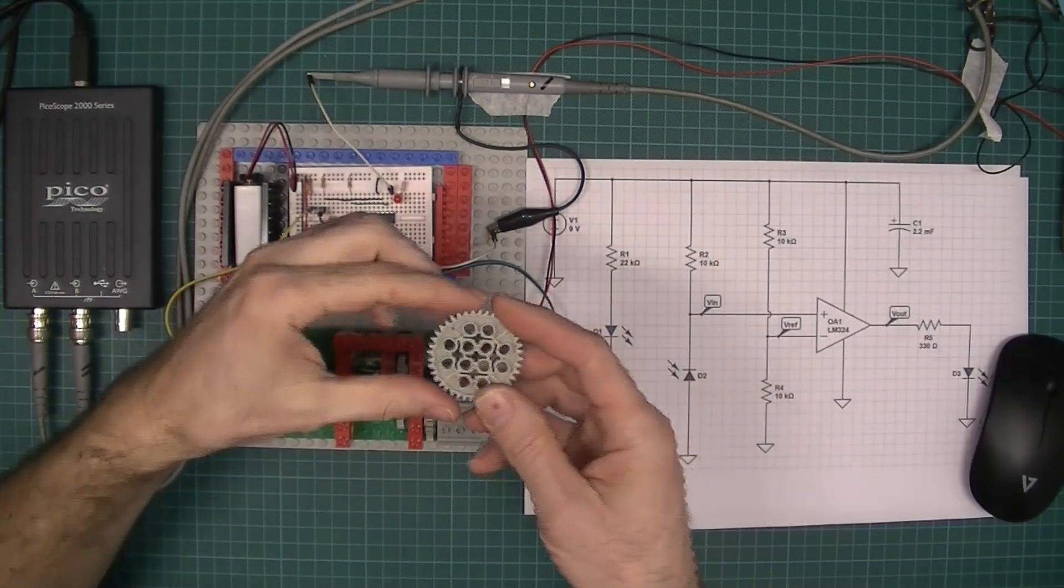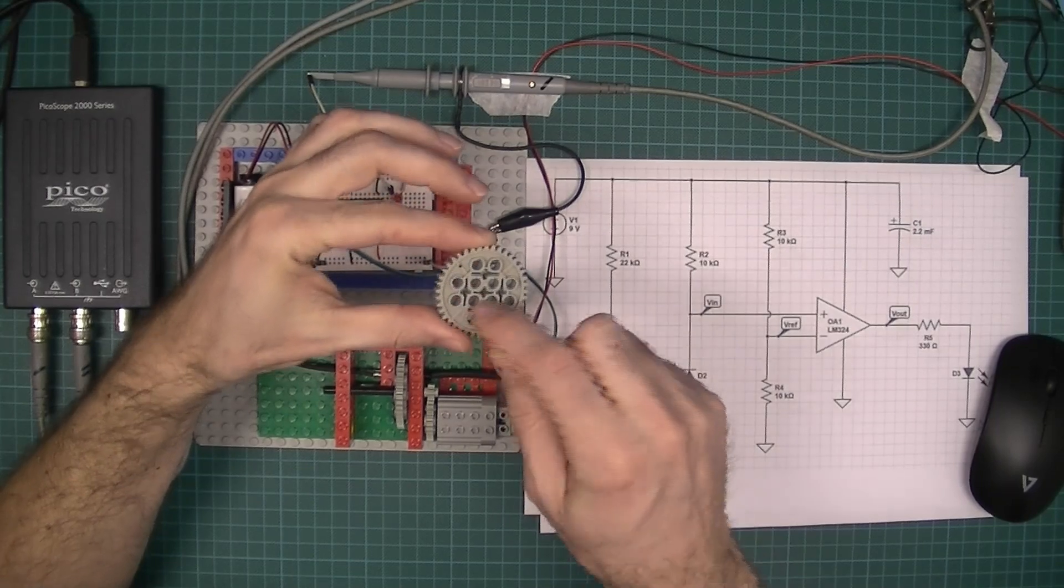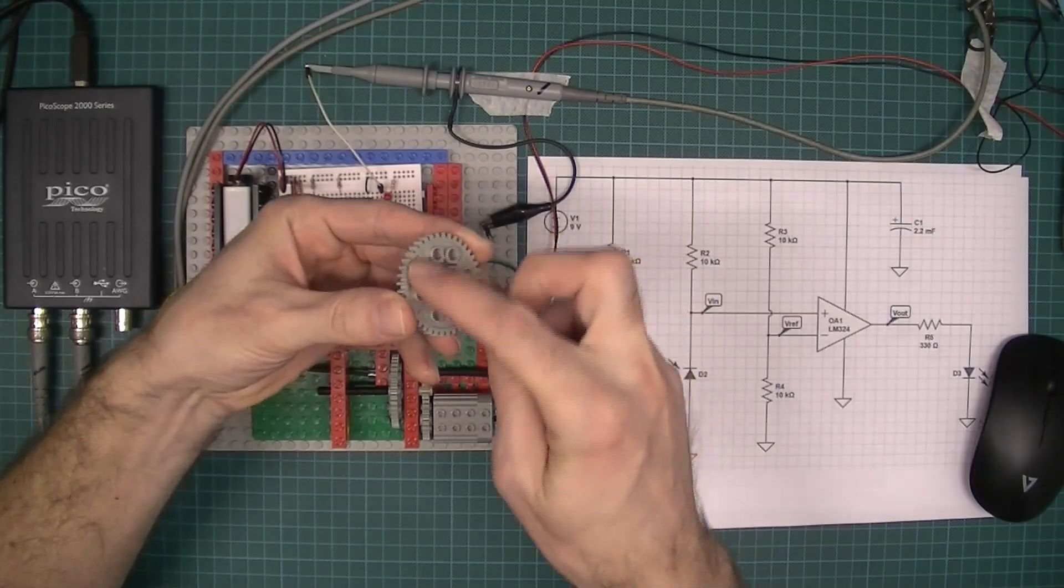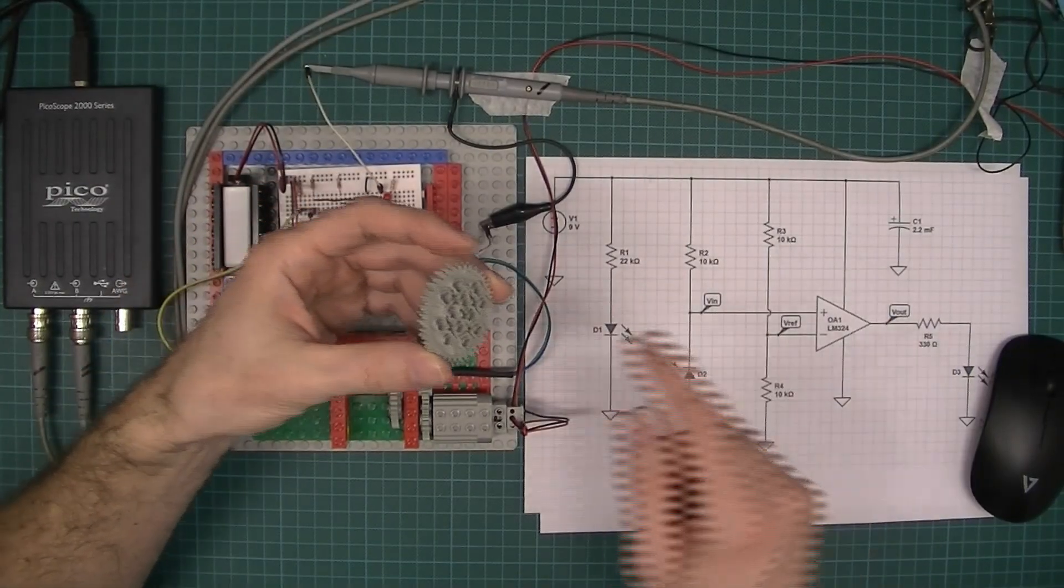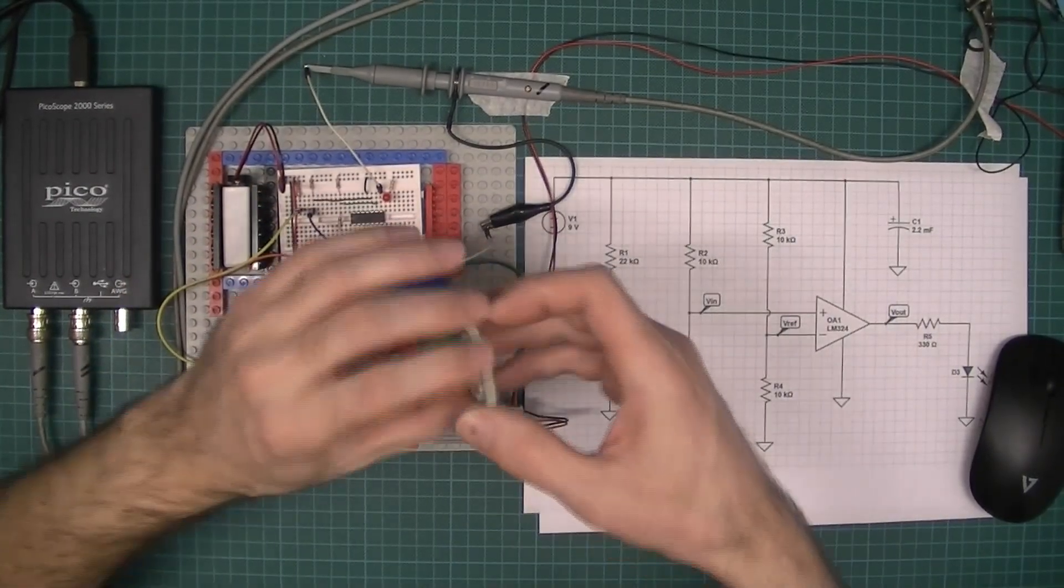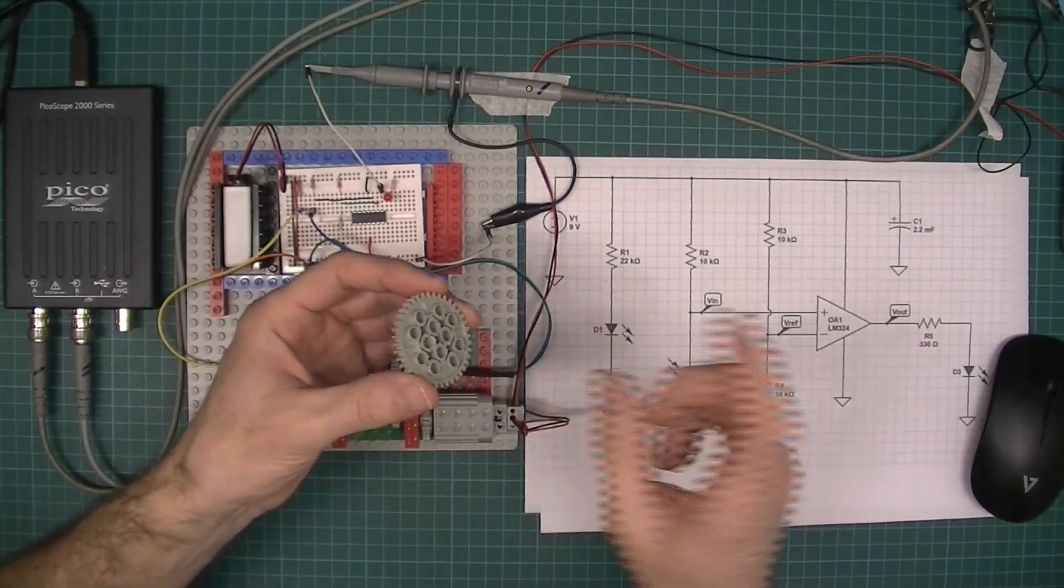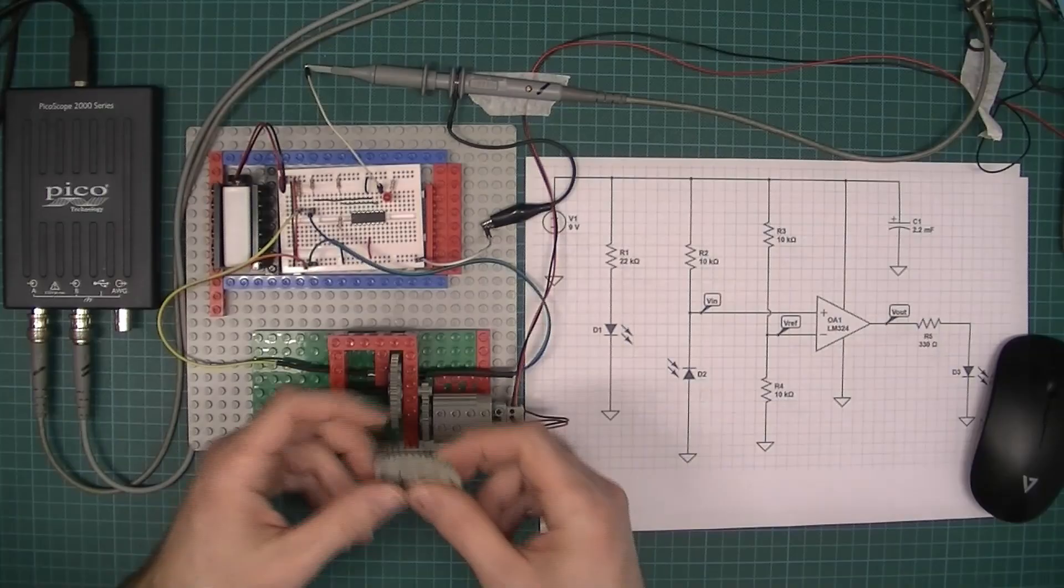The light source going that way is going to shine through these holes. One complete revolution of this is going to be eight pulses. If I then divide that by eight, that's going to give me one rotation or how many rotations per second. Divided by eight and then multiply by 60 gives me the RPM.